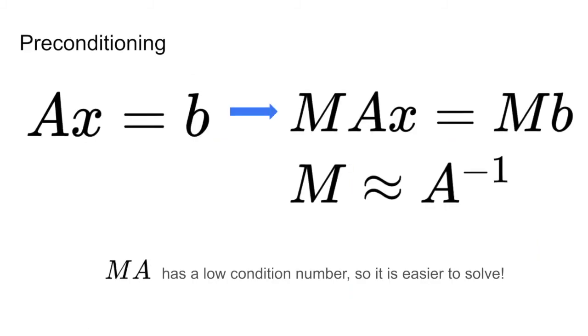Preconditioning, then, is the idea of transforming the solution space to make it easier to solve. In our case, we want to make it easier to apply gradient descent.